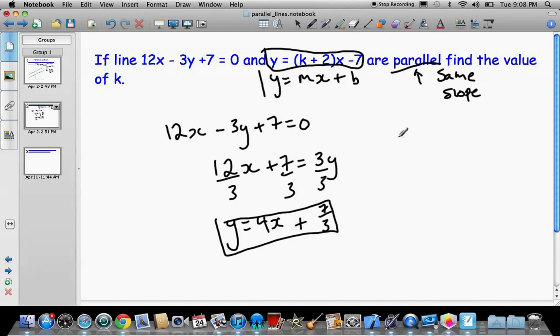And the slope of this guy is 4. So we'll have k plus 2 equals 4. And then we can just solve for k. So k equals 4 minus 2, or k equals 2. And that's our answer, k equals 2. So the slope of this guy is equal to the slope of that guy. And that's what parallel means.